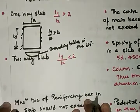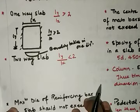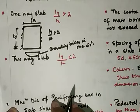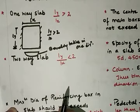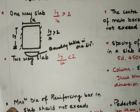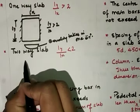Next is the two-way slab. If the ratio Ly upon Lx is less than 2, then it is a two-way slab. A two-way slab is also called a slab spanning in two directions, because bending takes place in both directions. Therefore, the main reinforcement is provided along both sides.